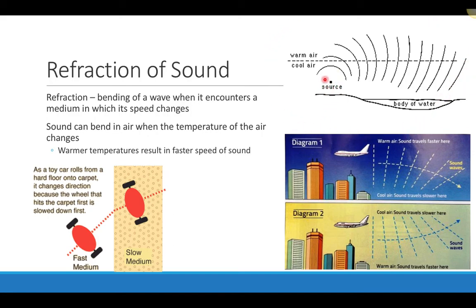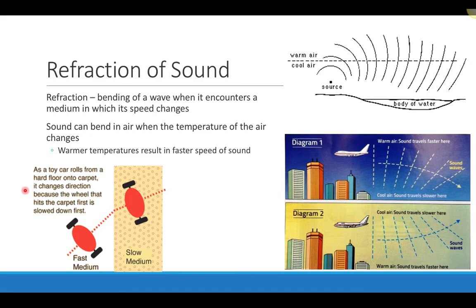Here's a sound source near a body of water on a warm summer day. The body of water is probably cooler than the outside temperature, creating a layer of cooler air above the water and warmer air near the ground. The sound source produces sound traveling in all directions, but because the sound travels faster in the warmer air, it tends to bend downward toward the cooler region.